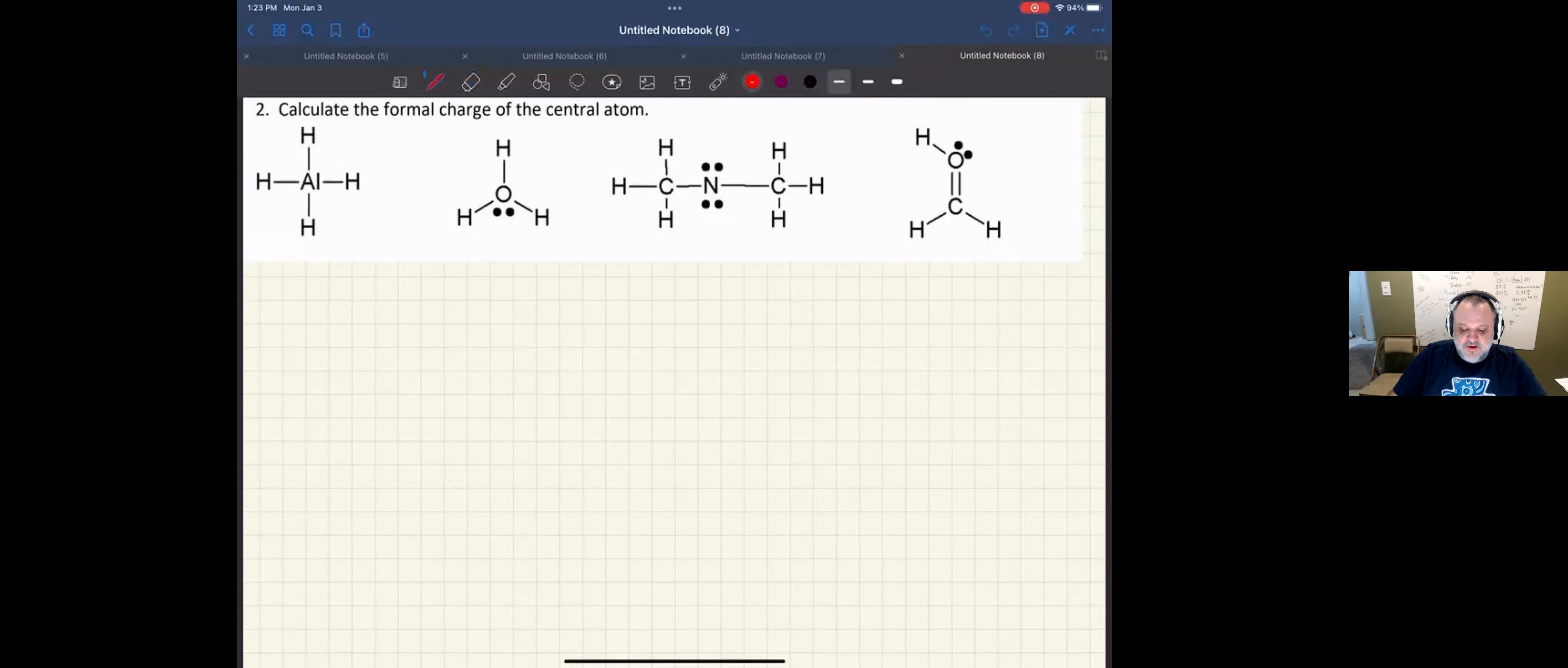All right, everybody, this question has us figuring out what the formal charge is on the central atom of these four Lewis structures. Just keep in mind, on this last one, we're going to figure out the formal charge on the carbon and the oxygen, because it's much harder to figure out which one is the central atom. So let's go ahead and do that, a little extra practice.